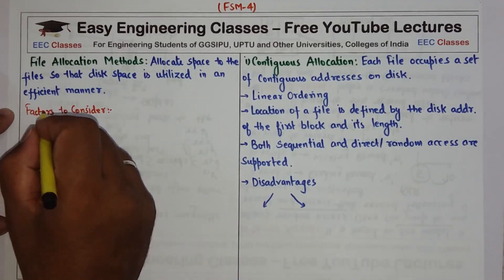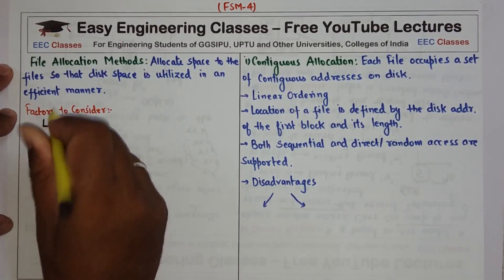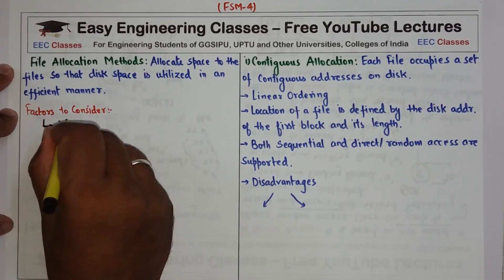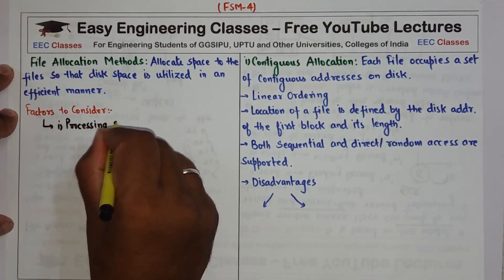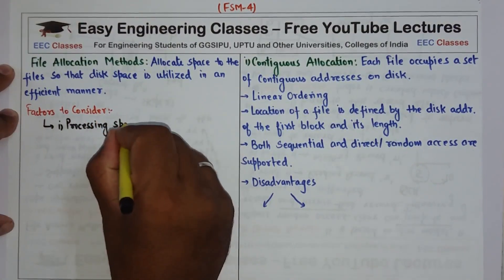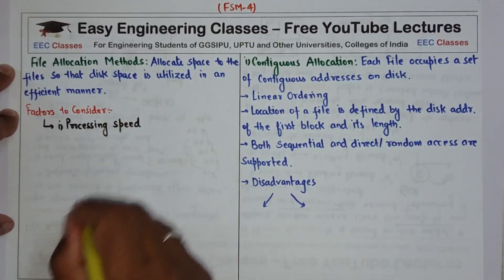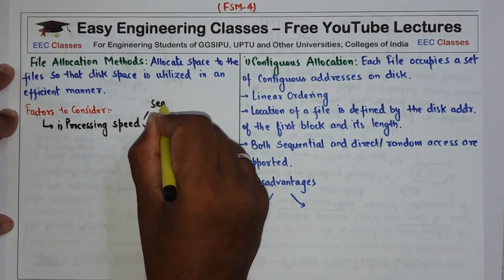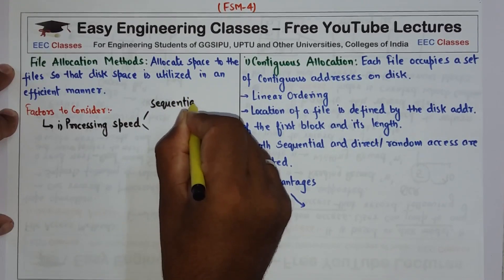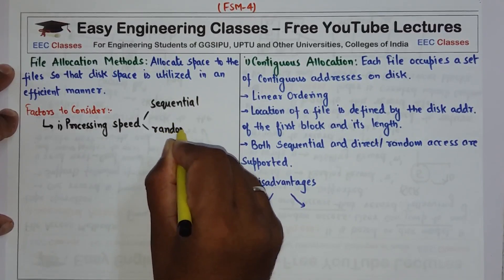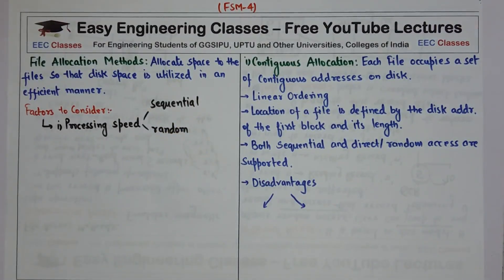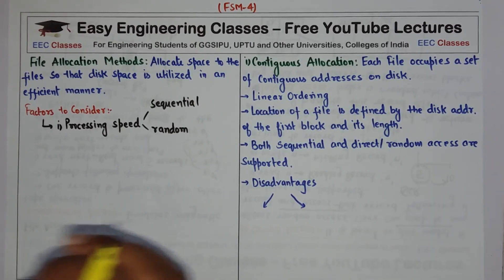The first factor is processing speed — the processing speed of sequential access and random access to the file. If I am allocating a space to a file and after that allocation my sequential or random access is too slow, then that allocation is considered to be inefficient.